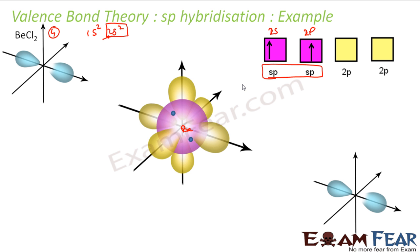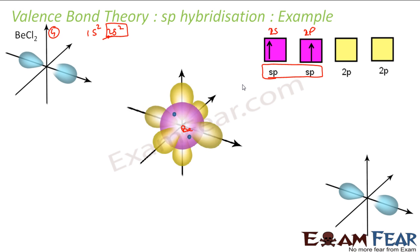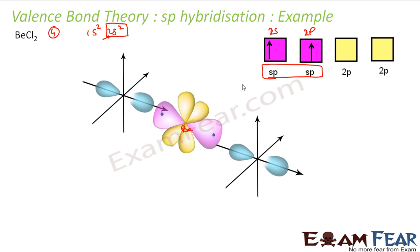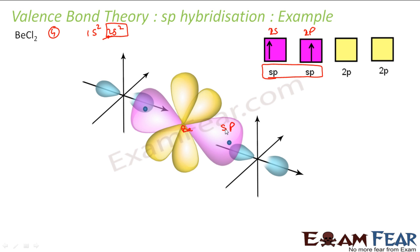So these two chlorine molecules are coming. The moment it comes, this becomes, if you see, sp hybridized. So this is my sp hybridized and this is sp hybridized. If you see, both have same shape and energy.